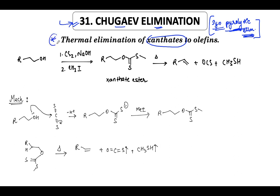Chugaev Elimination is a very simple reaction, and here we are going to talk about it along with a previous year question from the CSIR-NET exam. Thermal elimination of xanthates to olefins — that is the Chugaev Elimination. Very easy to understand.